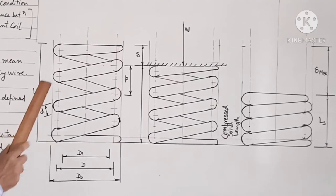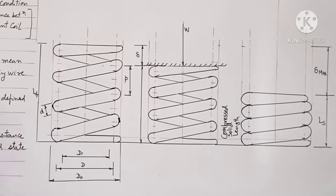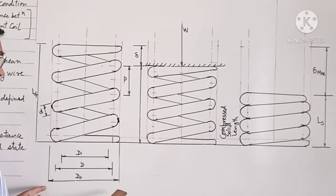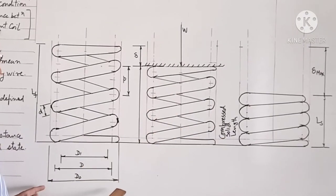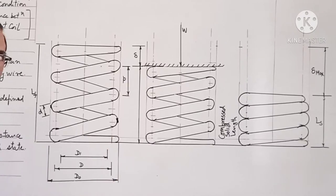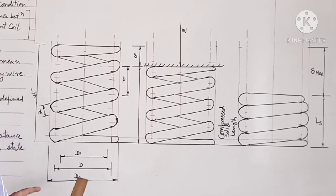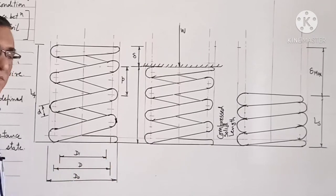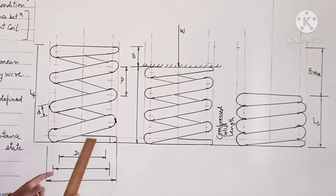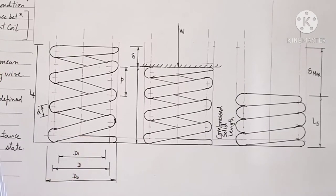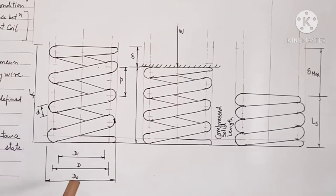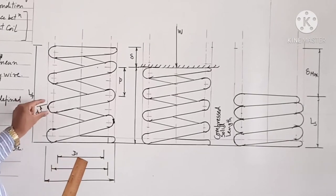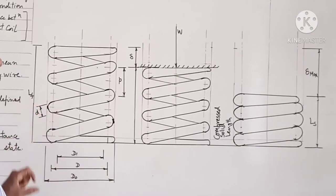Now we will go through this figure. In this figure, DO is the outside coil diameter, DI is the inside coil diameter, D is the mean coil diameter, where d is the wire diameter.